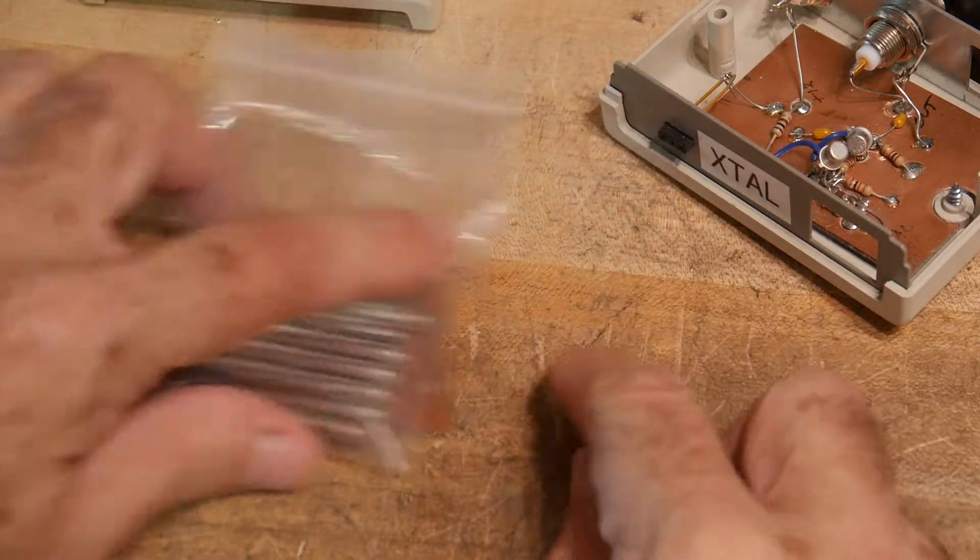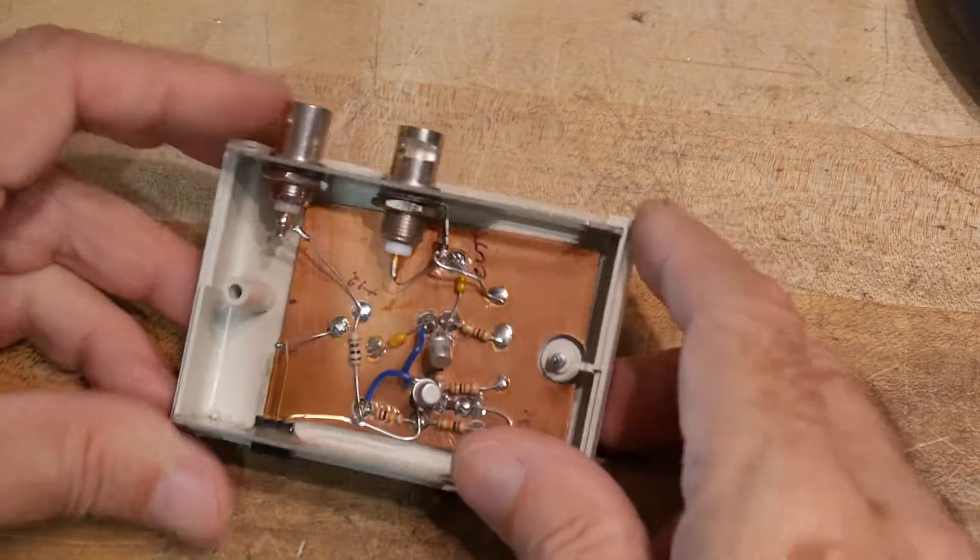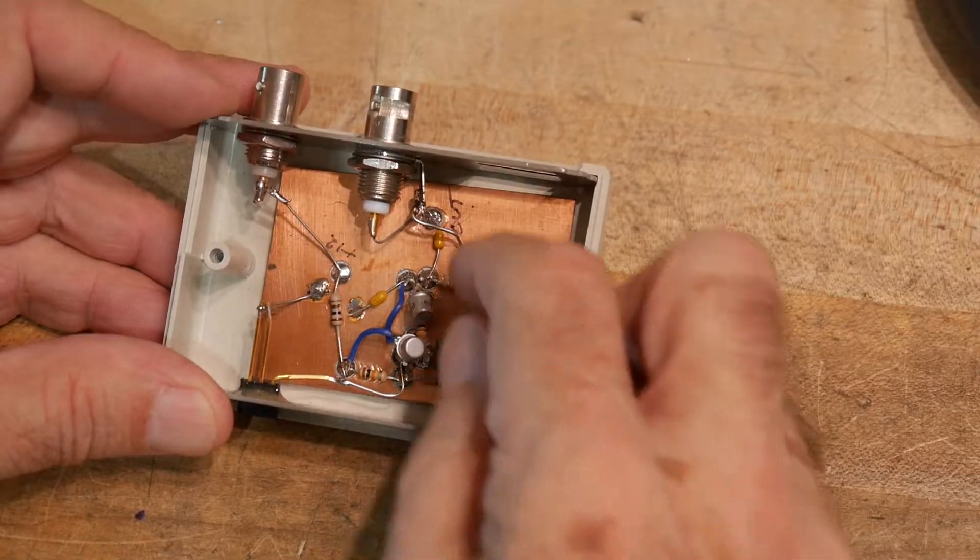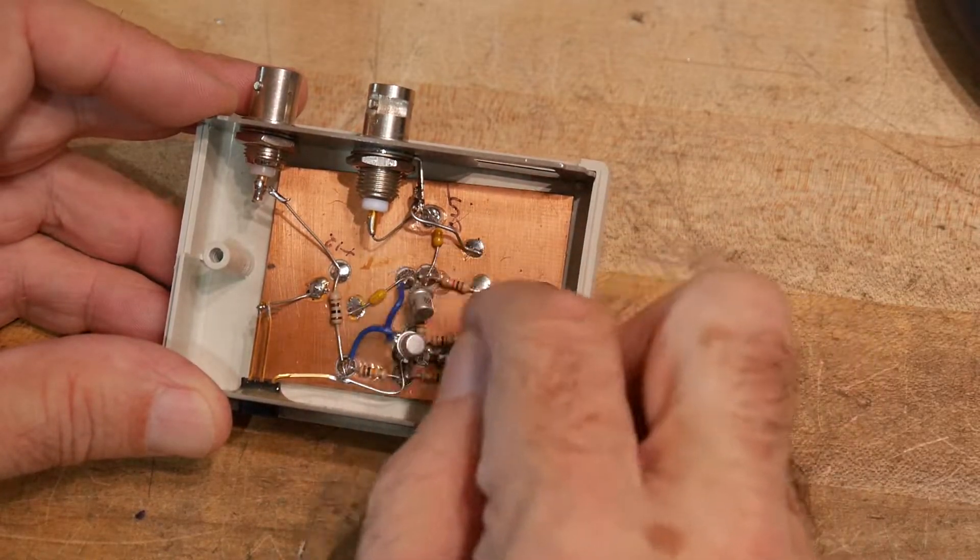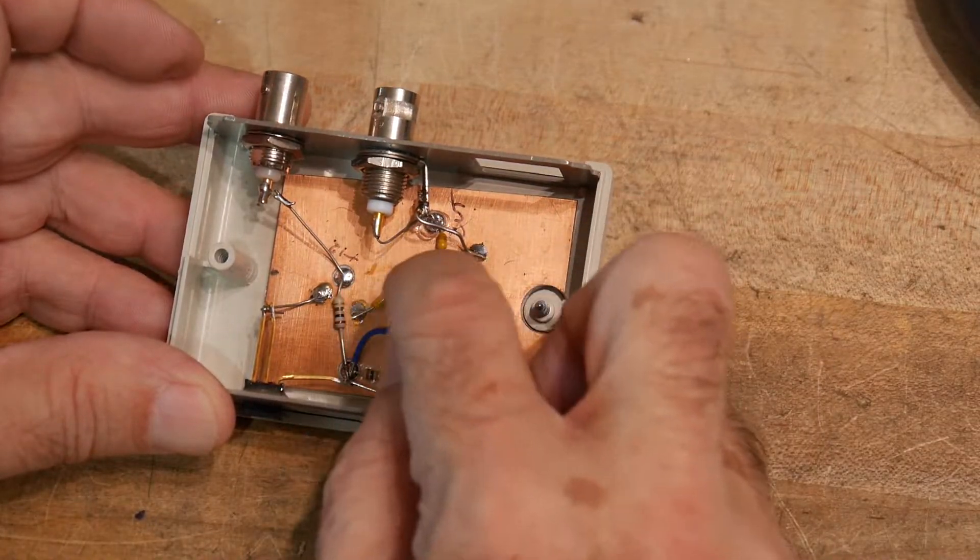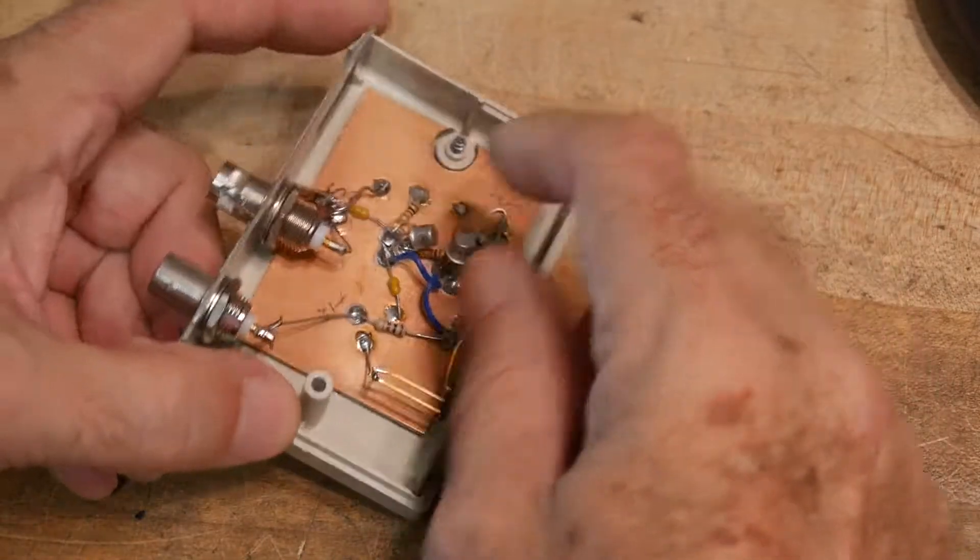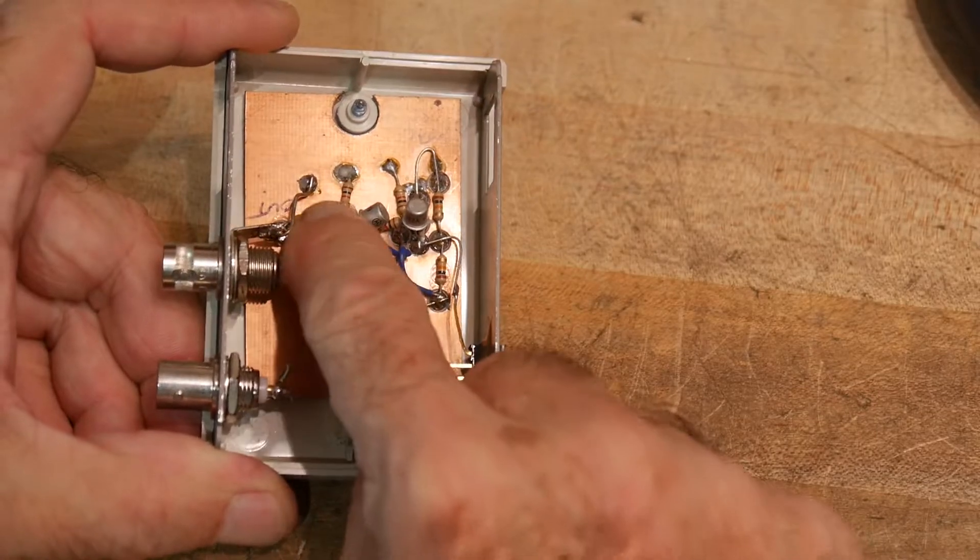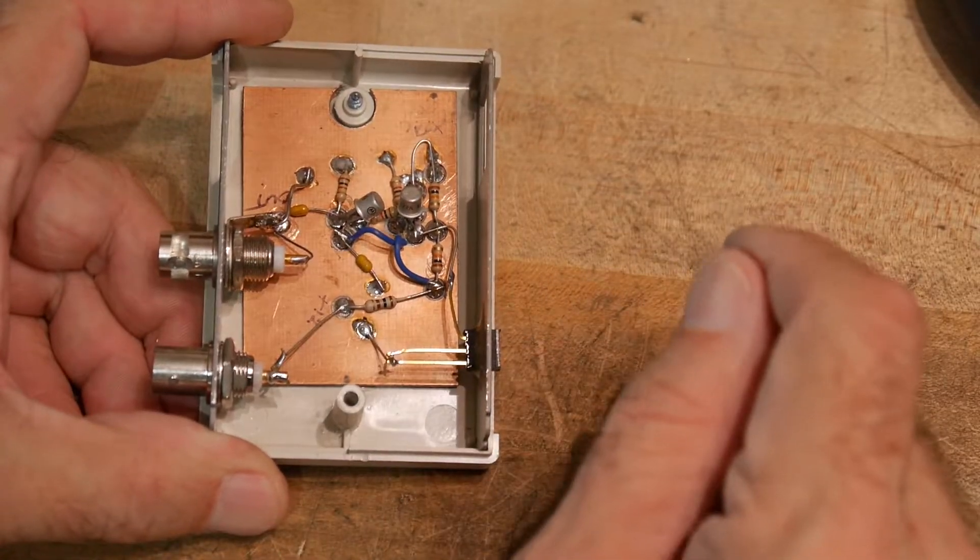So anyway, a tip there. So what I've done is I've kind of started it out and figured out where things want to be. And then, like here, I know this transistor will be here, so I ground three little pads in a triangle.